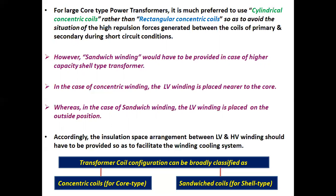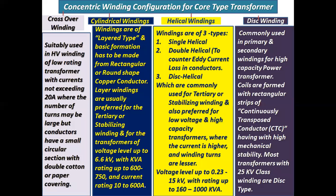Sandwich winding would have to be provided in case of higher capacity shell type transformers. In the case of concentric windings, the LV winding is placed nearer to the core, whereas in the case of sandwich winding, the LV winding is placed on the outside position of the core. Accordingly, the insulation space arrangement between LV and HV winding should be provided to facilitate the winding cooling system. Transformer coil configuration can be broadly classified as: concentric coils for core type, and sandwich coils for shell type transformers.